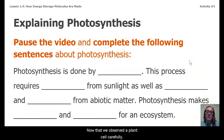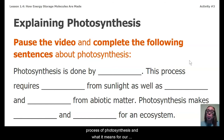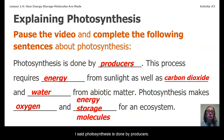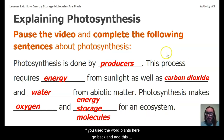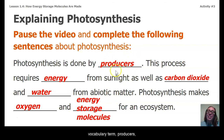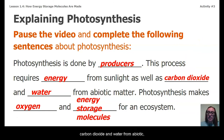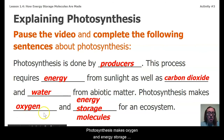Now that we observed a plant cell carefully, let's reflect on our noticings by explaining the process of photosynthesis and what it means for our energy storing molecules. Pause the video and complete the following sentences by filling in the blanks. Photosynthesis is done by producers — if you used the word 'plants,' go back and add the vocabulary term 'producers' because we're going to be seeing it a lot. This process requires energy from sunlight, as well as carbon dioxide and water from abiotic, or non-living, matter. Photosynthesis makes oxygen and energy storage molecules for an ecosystem.